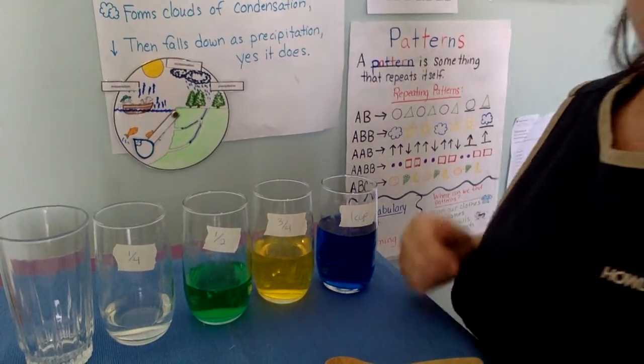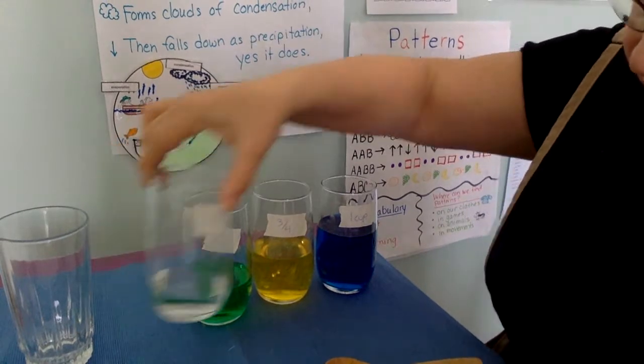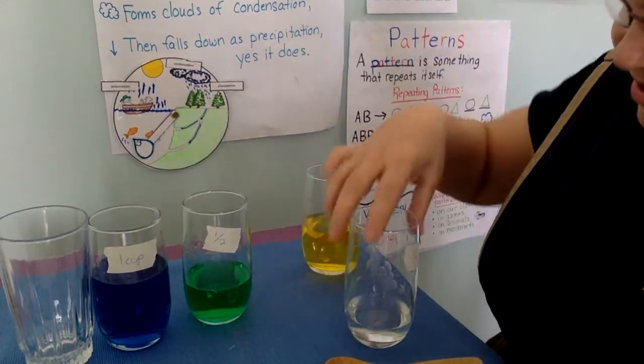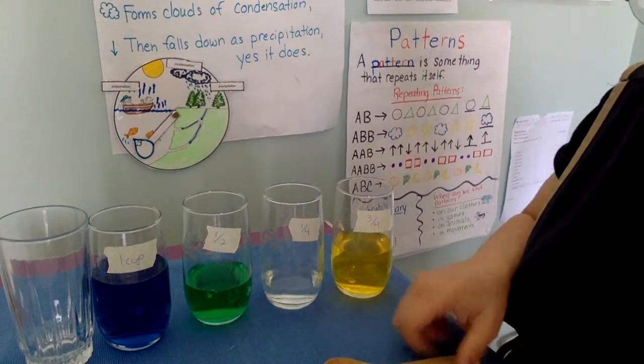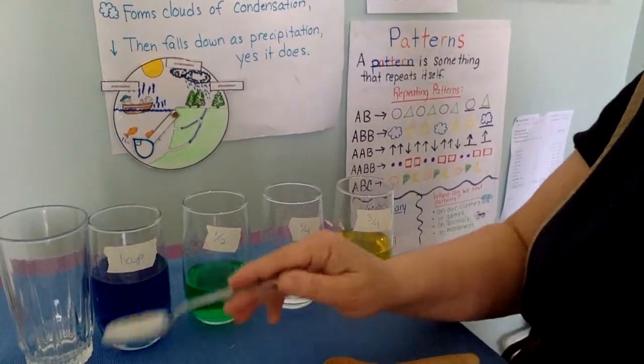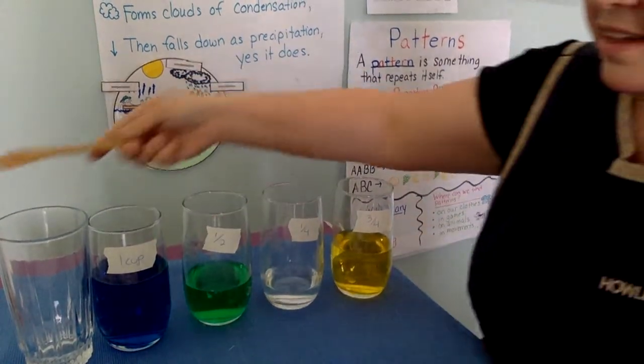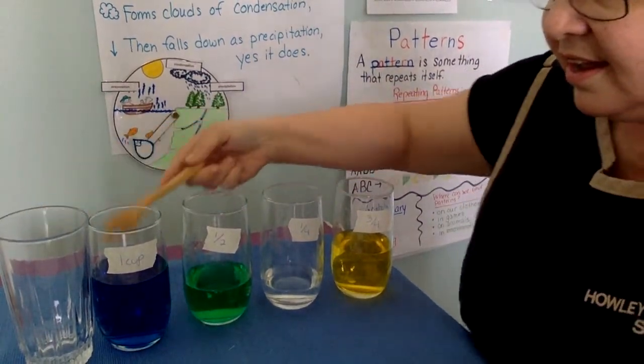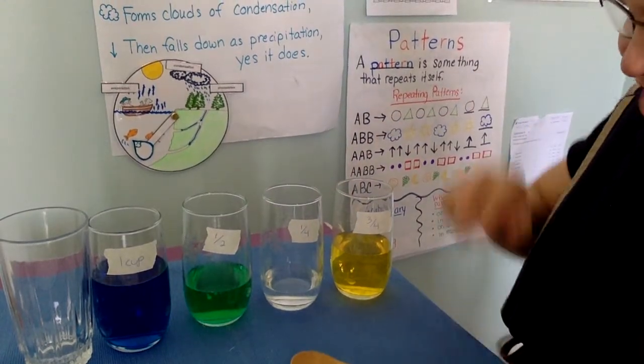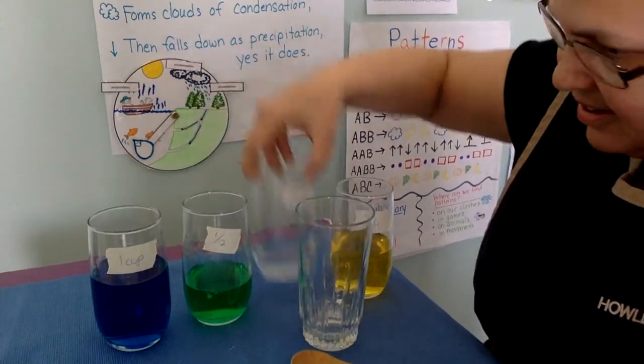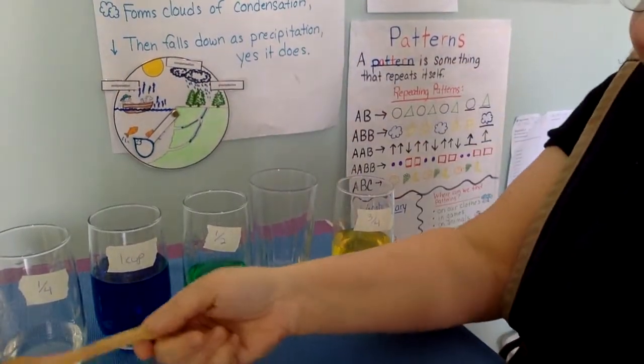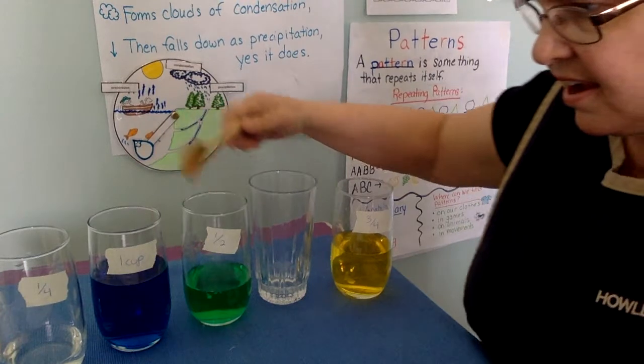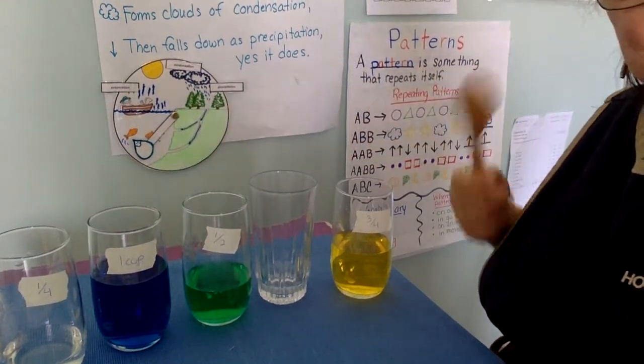I wonder what will happen if I changed them around. So let's see. Let's put the full one cup at the beginning, a quarter cup here. They're out of order. And let's see what the sound sounds like. It sounds different, right? Let's move some more around. Musical water.